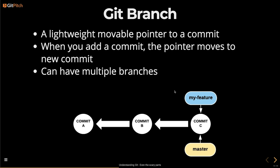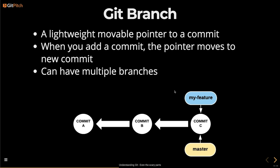So what's a branch? It's essentially just a lightweight movable pointer to whichever commit you're sitting at in a repository. When you make a commit, the pointer automatically sits at the latest commit. You can have multiple branches — when you first make a commit, it'll automatically be on master, but you can create another branch. The way Git knows which branch you're sitting at is using another pointer called HEAD, also known as a ref. So the HEAD ref is going to point at the branch, which is also a pointer.